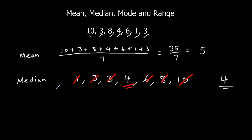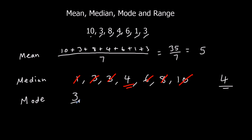The mode is the most common number. Looking at the ordered list, we've got 1, 3, 3, 4, 6, 8, and 10. The only number there's more than one of is 3. So that's the mode. The mode is the number that's most common — the number that's there most often.